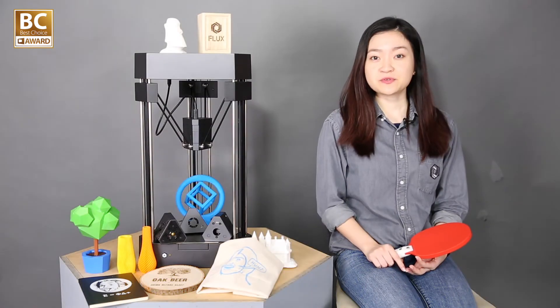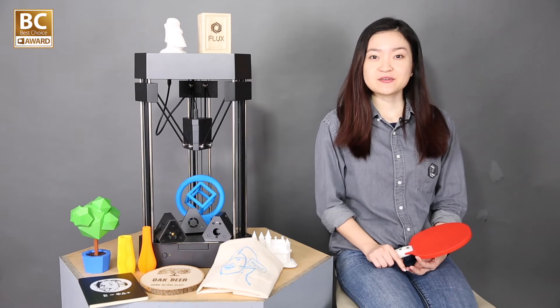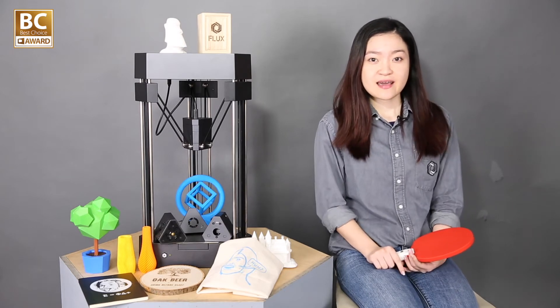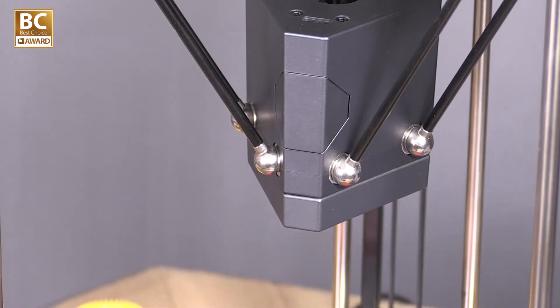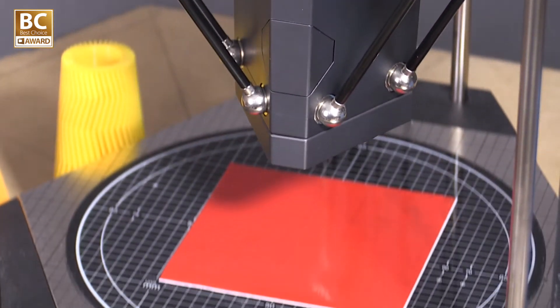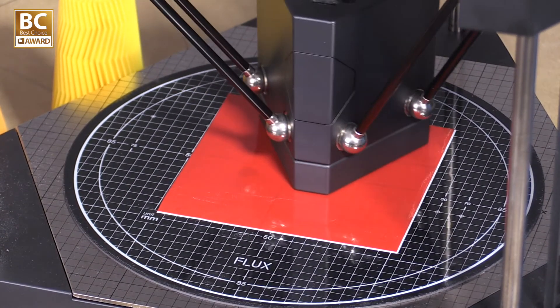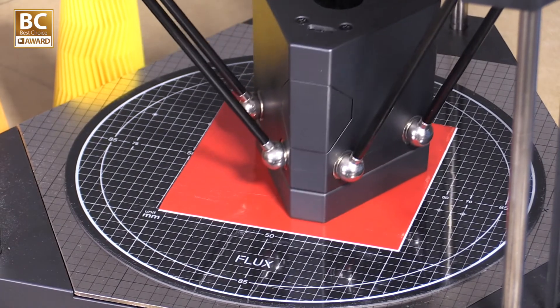Flux Delta Plus is a precise and stable machine. Now you can basically do anything and just enjoy the fun of digital crafting. The new mechanism increases the extruder force by 50%, providing better quality and faster printing speed.